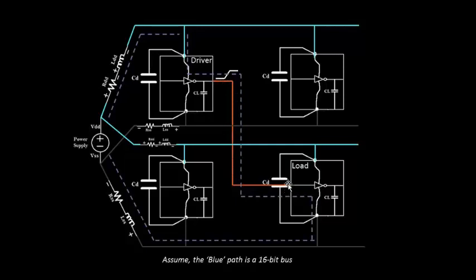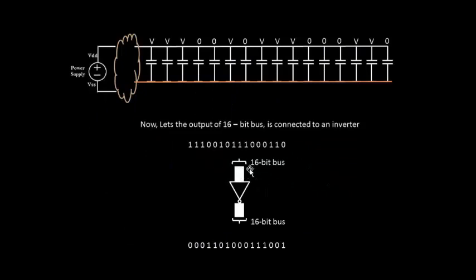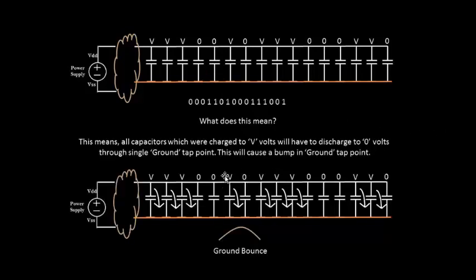Now let's take a scenario where this 16-bit bus is connected to an inverter. When you pass this particular logic to the inverter, the output will be an inverted value. All the capacitors that were charged to logic 1 will get discharged to logic 0 at the same time, and all the capacitors that were at logic 0 will charge to logic 1. Let's see what can go wrong.